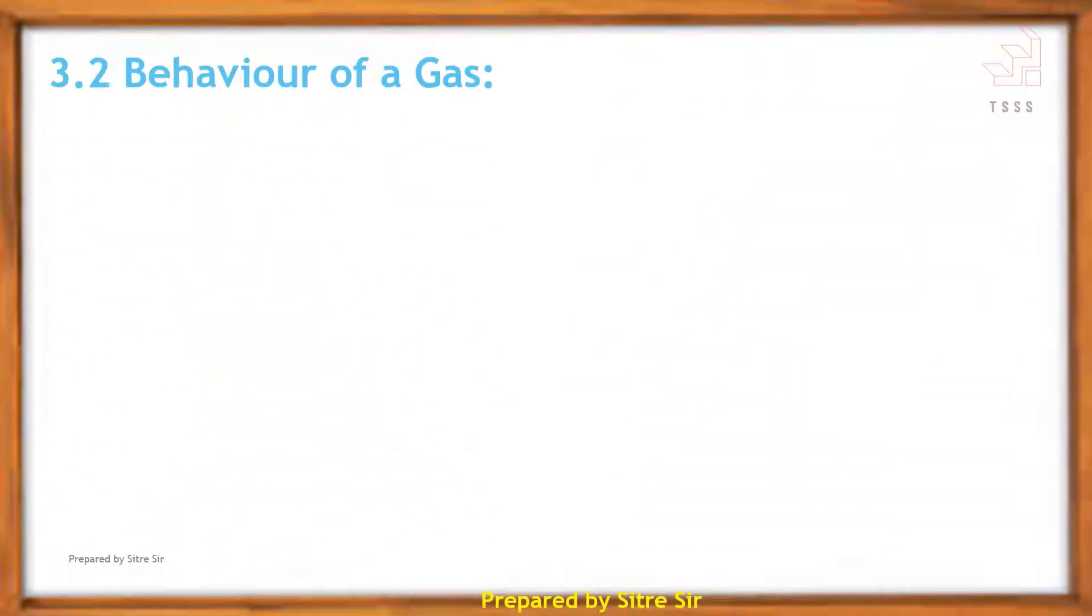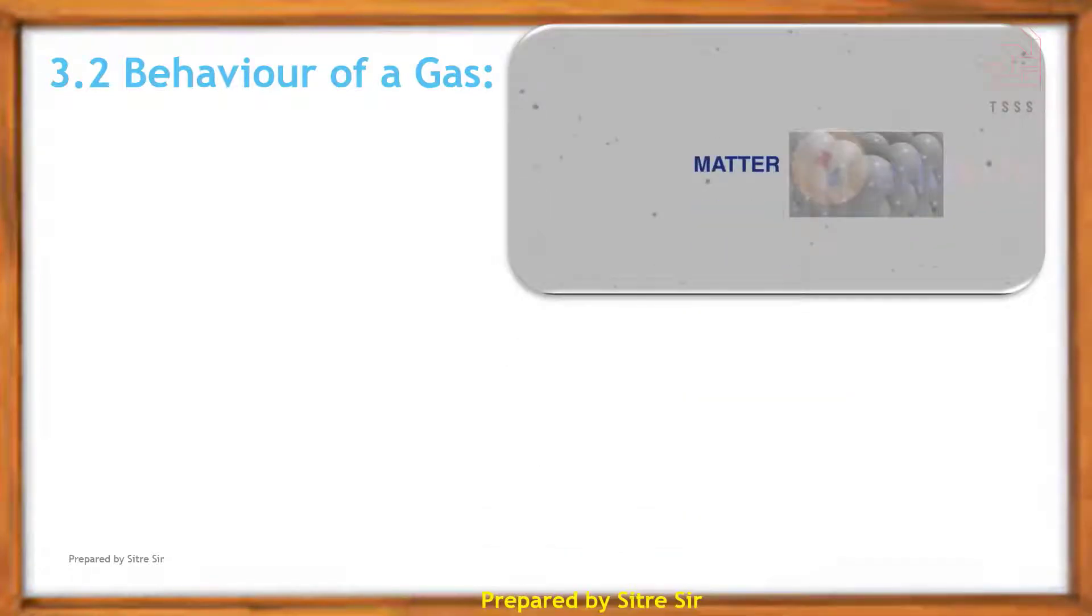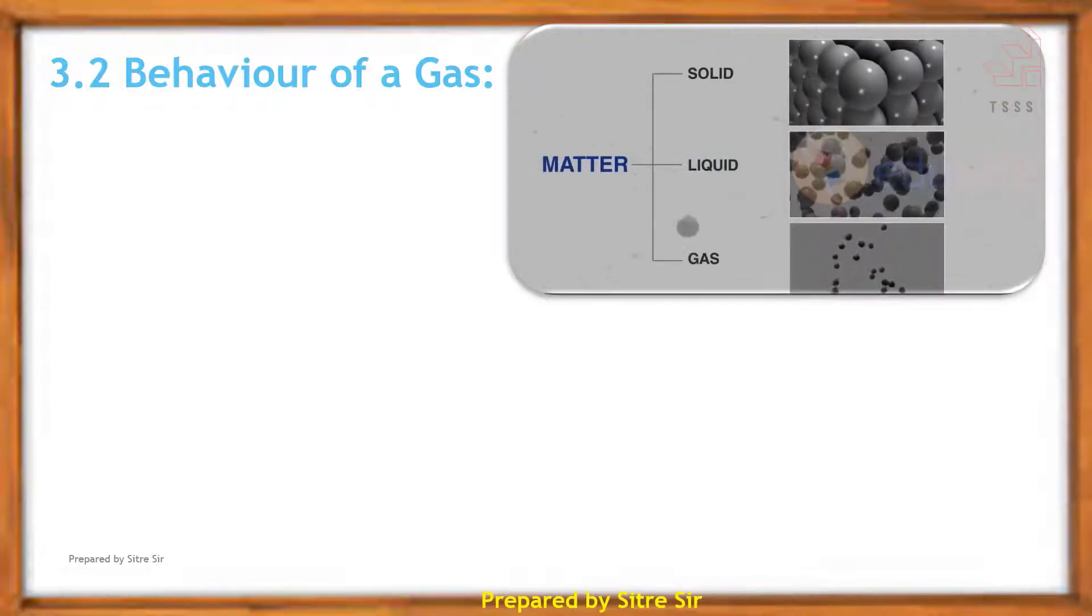Now, behavior of gases. Matter consists of three states: solid, liquid, and gases. In solids, atomic arrangement is regular and molecules do not move. In liquids, molecules are moving.